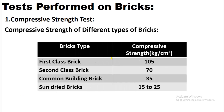First class bricks must have a strength of 105 kg per centimeter square. Second class bricks should have 70 kg per centimeter square. Common building bricks should have 15 to 35 kg per centimeter square, and sun-dried bricks should have 15 to 25 kg per centimeter square. First and second class bricks should be used in superstructures, while lower standard bricks should be used in substructures.